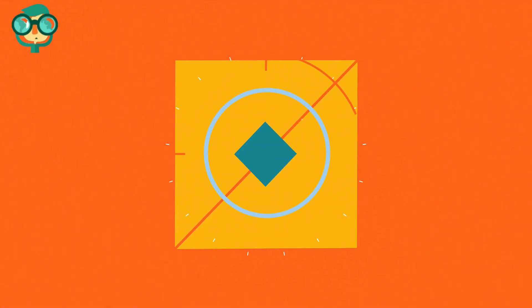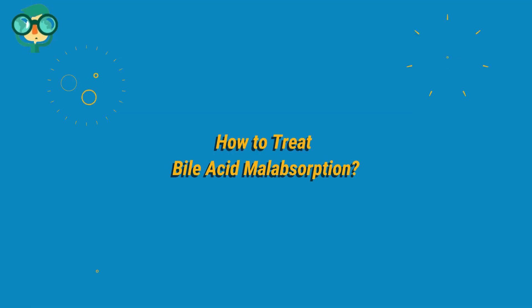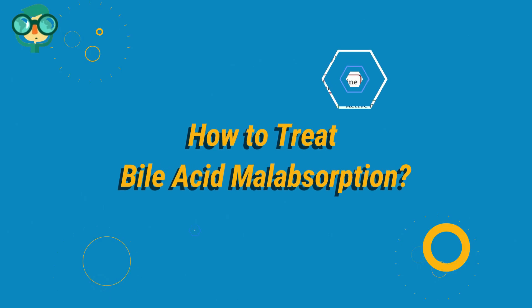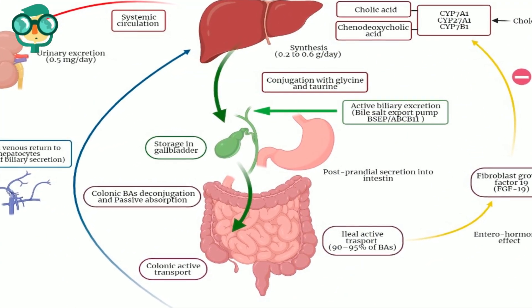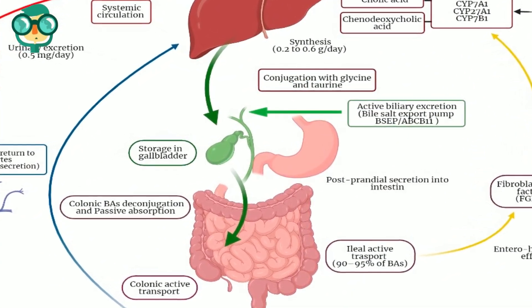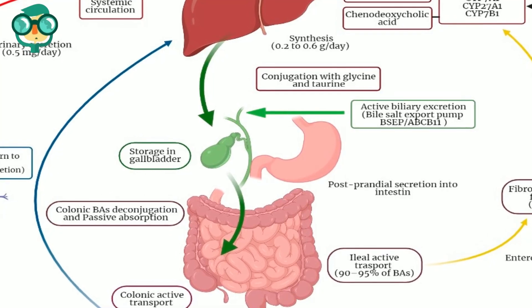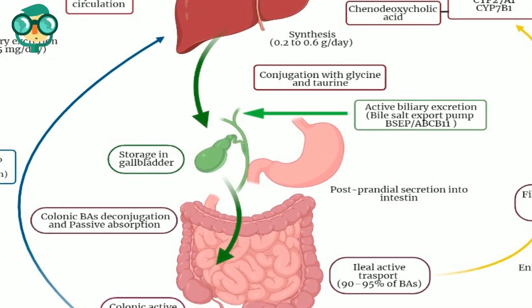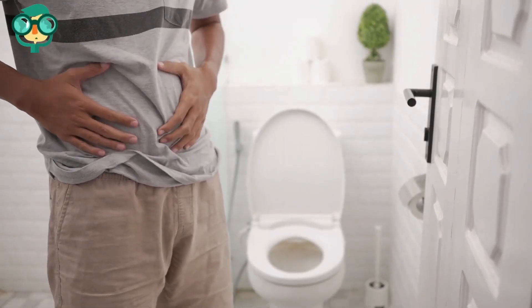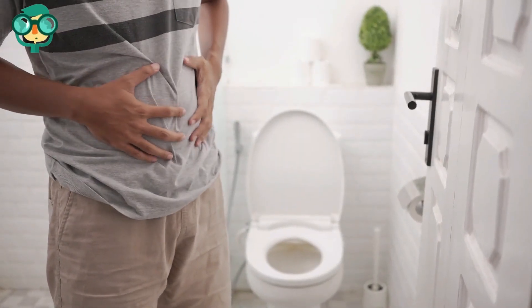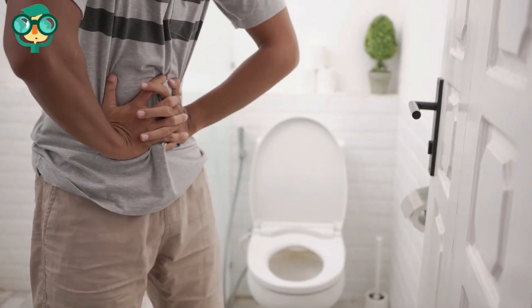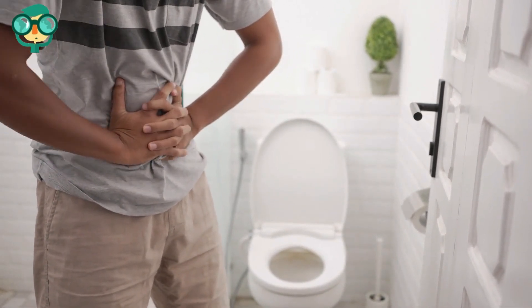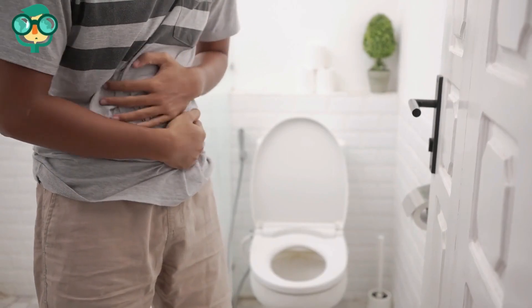Today, we will talk about how to treat bile acid malabsorption. Bile acid malabsorption, BAM, is a condition where your liver produces too much bile, causing abdominal cramps and diarrhea. The condition could be chronic, but you can still manage the symptoms and continue living your everyday life.